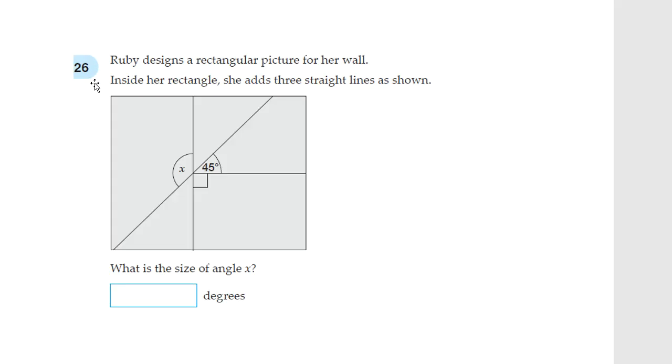Question 26. Ruby designs a rectangular picture for her wall. Inside a rectangle, she adds three straight lines as shown. What is the size of angle X? This is the right angle. So, we already know that is equal to 90 degrees. And, all these angles are on a straight line. And, we know that angles on a straight line equal to 180 degrees. So, this is 90, this is 45, so, what else do we need for all of this to add up to 180? That's right. We need 45 degrees here. And, then, let's have a look.